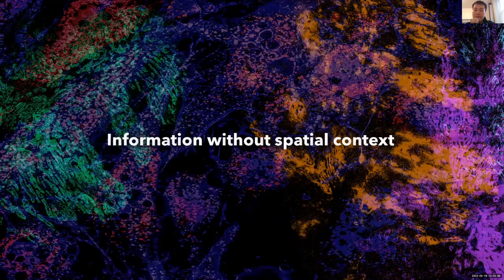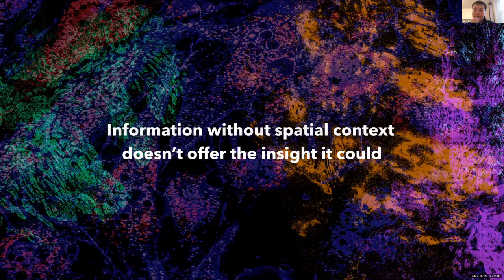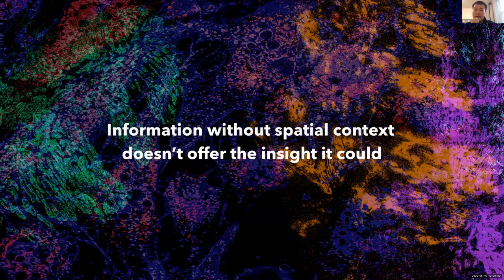For a biological system without any spatial context, you are basically seeing many things scrambled. But if you have everything in context, then you can see where different cells are and how they interact with each other. That's why it is so important to have a tool that enables multiplexed imaging at single-cell level while also adding the critical spatial component back.